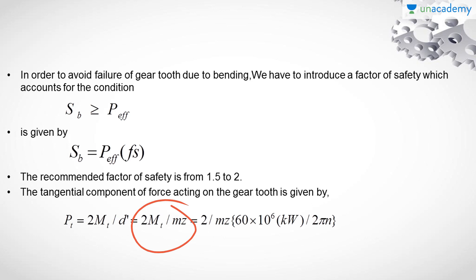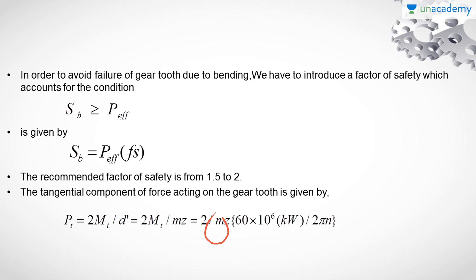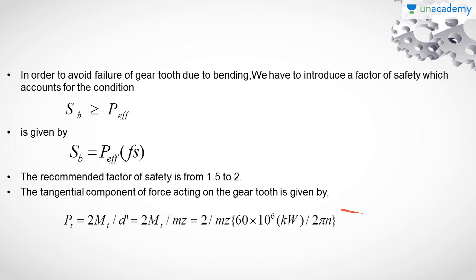We have the value of module M which will be the safest value, and we can replace the value of MT with the value of KW and 2πN, where N is the speed of the gear and KW is the power to be transmitted by the gear. So with these conditions, PT the tangential component of the force acting on the gear is given by 2 divided by MZ, multiplied by 16×10⁶ into KW divided by 2πN.